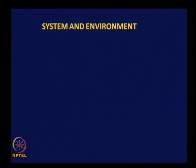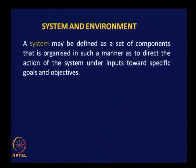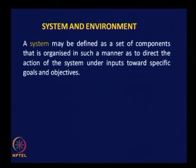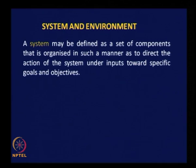Let us define some of the terms we have seen in the flow chart. A system may be defined as a set of components organized in such a manner as to direct the action of the system under inputs towards specific goals and objectives. We have a set of components arranged such that when you give an input, the output satisfies the set objective — that is what is implied by specific goals and objectives.